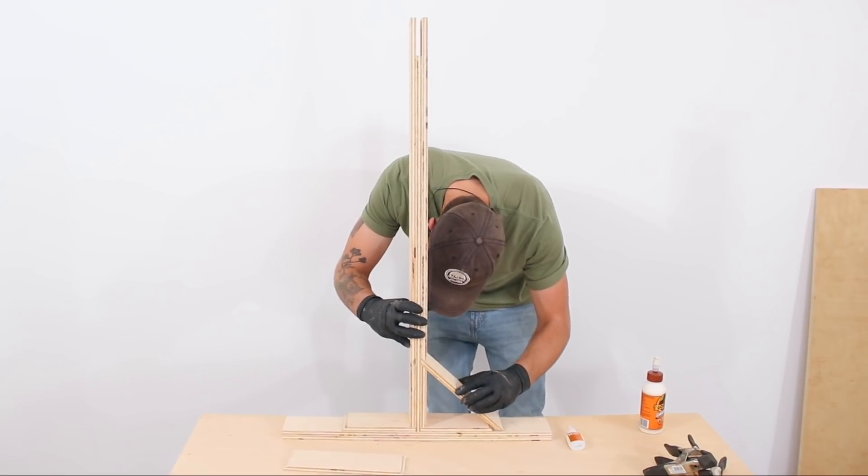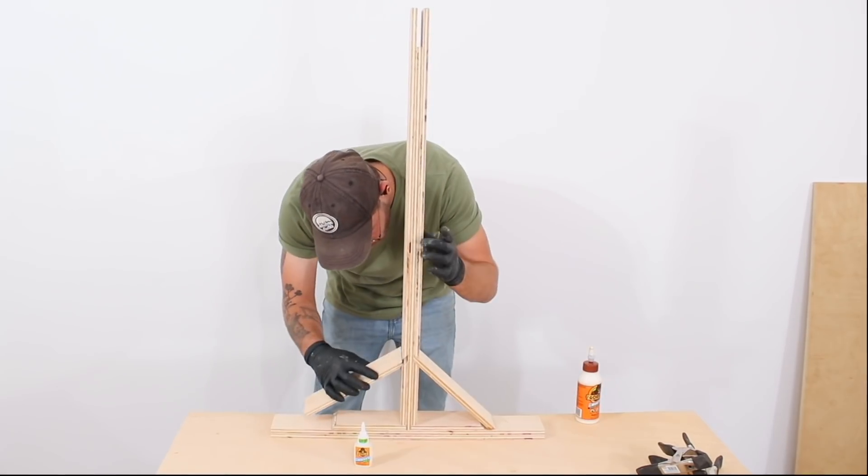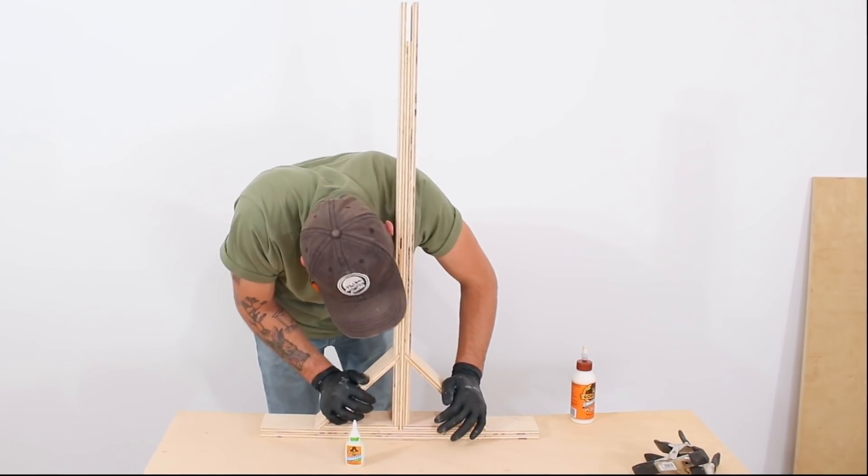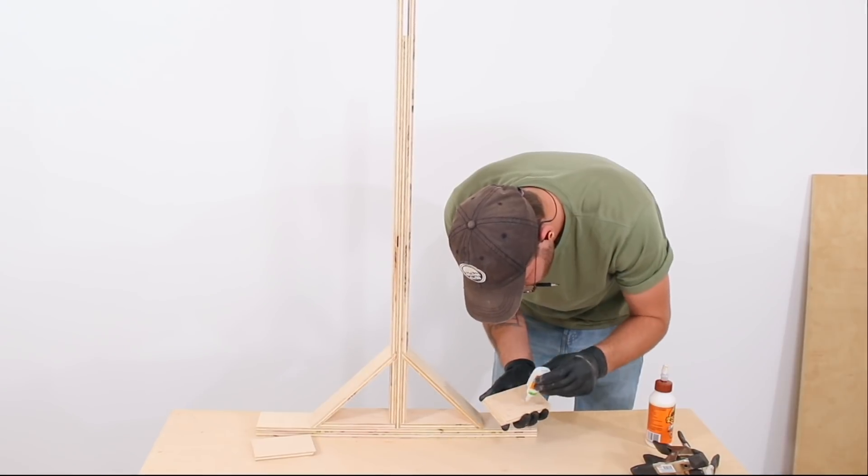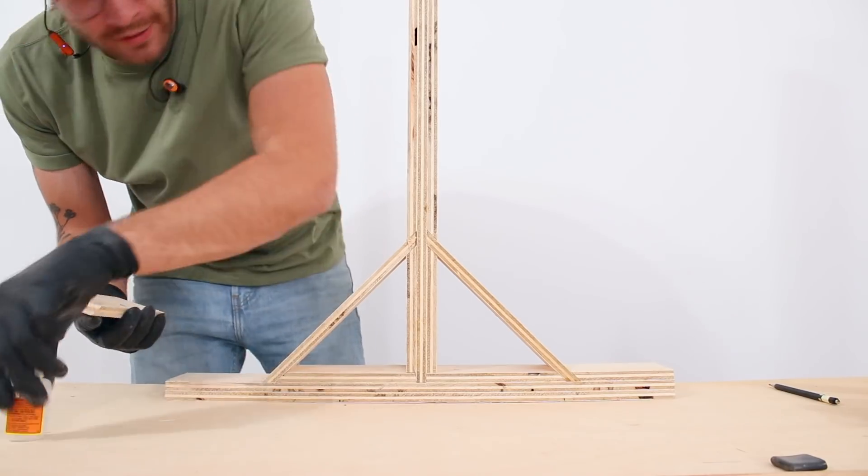And just like on all of my pieces, once I had them set in place I held them there for about 30 seconds to make sure that everything tacked. Once I knew those pieces were held in place I could cap each end of the leg with one more piece. This is gonna lock that joint in place and make this whole post really strong.